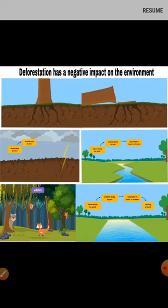Deforestation has a negative impact on the environment. The roots of trees help hold the soil, but if trees are cut down, the soil becomes loose. This topsoil is blown away by wind or washed away by rain, carried and deposited in rivers or streams, leading to blockage of flowing water — causing rivers and streams to become wider and leading to floods.